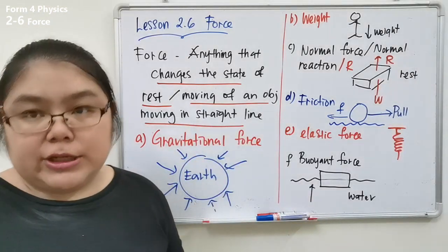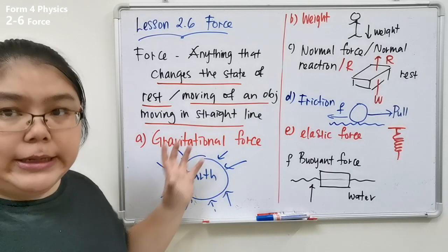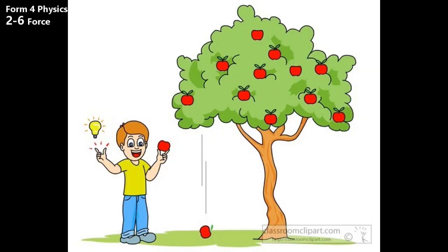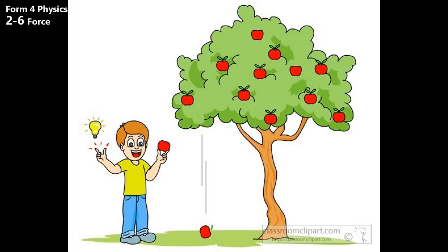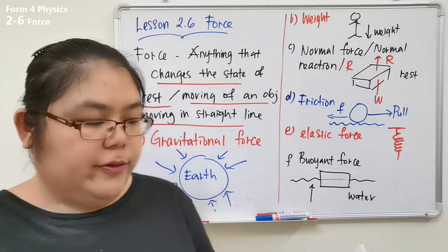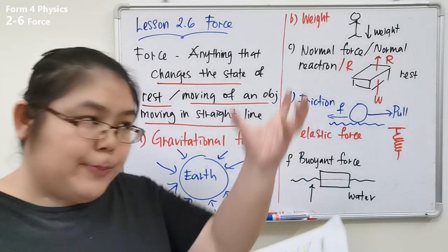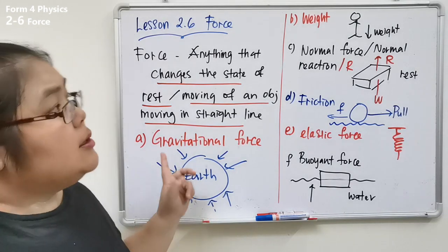The first example of force is gravitational force — a force that pulls objects toward the center of the Earth. From the notes they also have a diagram; I'll show you the diagram of an apple falling from a tree. Gravitational force is actually an attractive force from the Earth that pulls all objects toward its center.